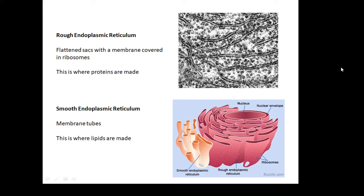There's another one, smooth endoplasmic reticulum, and these are kind of tube things, and this is where lipids are made. Lipids are molecules like fats. So, rough endoplasmic reticulum and smooth endoplasmic reticulum.